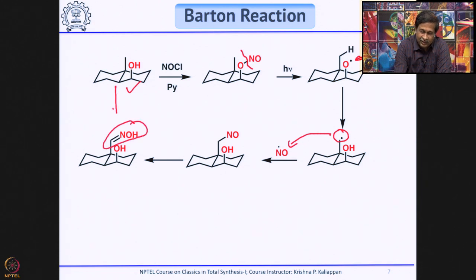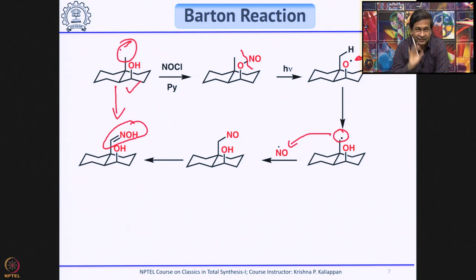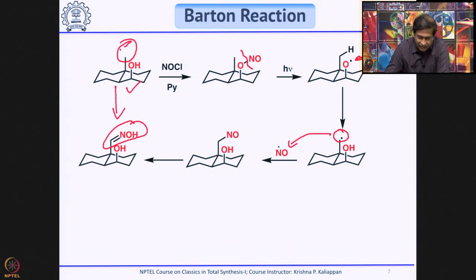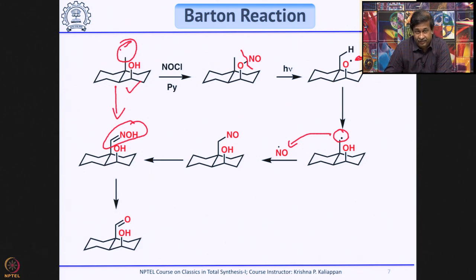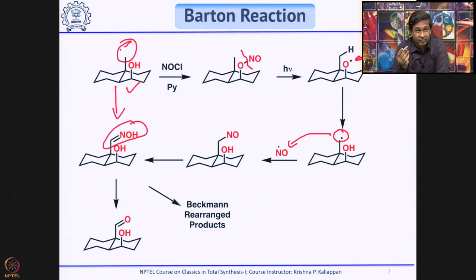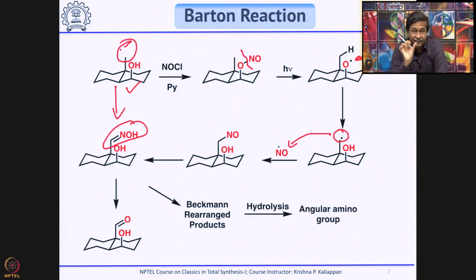In the whole process, the angular methyl group — which is very difficult to functionalize — has been functionalized. This reaction is called Barton's reaction. Once you have the oxime, you can hydrolyze it to an aldehyde, or a Beckmann rearrangement can be performed — converting the CH3 group into an amide and then into an amine. Many things can be done with the oxime moiety at the angular methyl group.